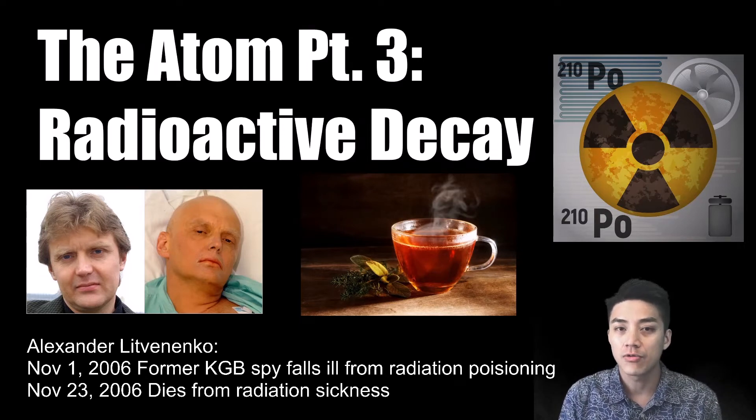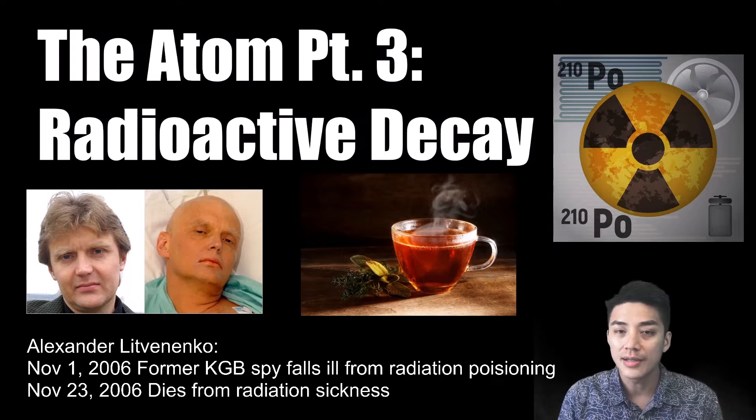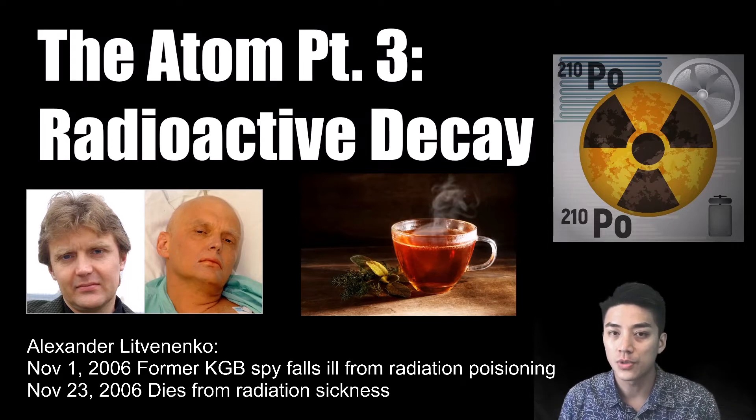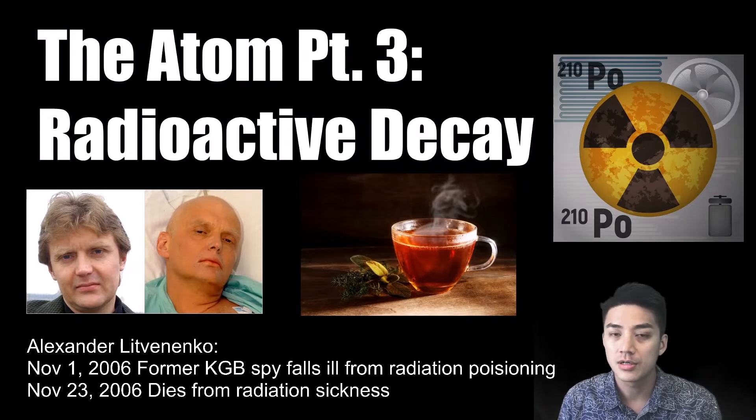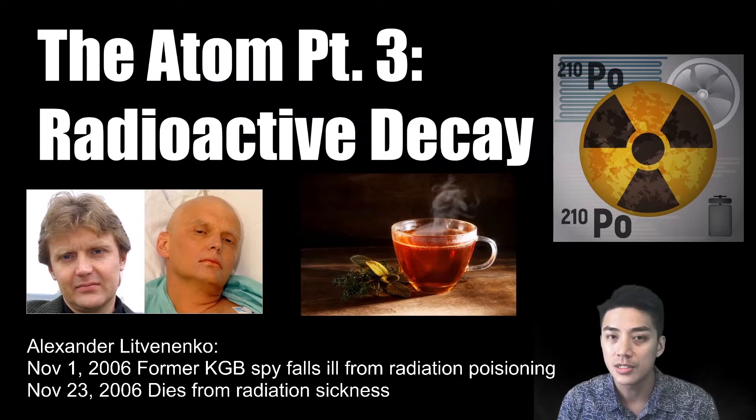After speaking out about the corruption in his home country of Russia, former KGB spy Alexander Litvinenko was forced to flee to the UK where he sought refuge and asylum. Years later, he was tracked down by two Russian assailants who slipped polonium-210 into his tea.